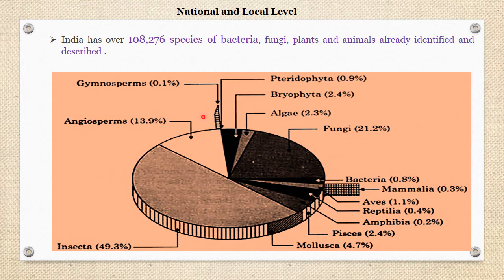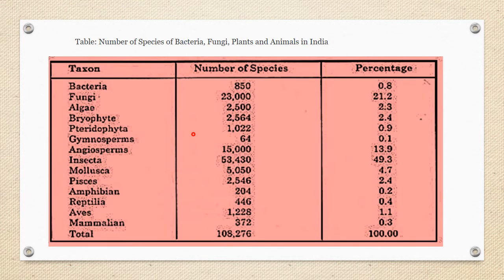All these species occur on land, fresh and marine waters, or occur as symbionts in mutualistic or parasitic state with other organisms. This table represents the number of bacteria, fungi, plants, and animals in India, with taxa ranging from bacteria to mammals — showing the number of species and their percentage contribution.